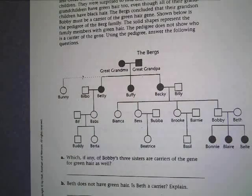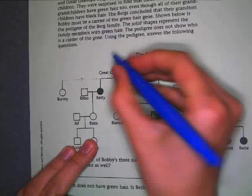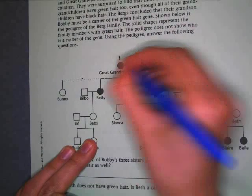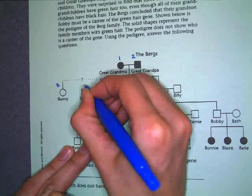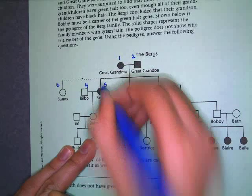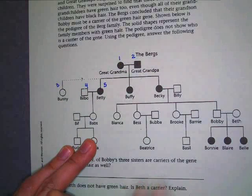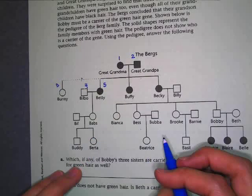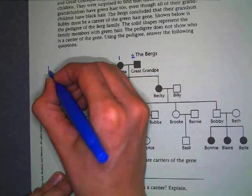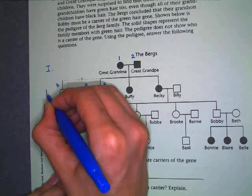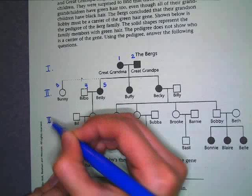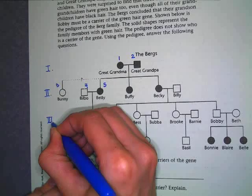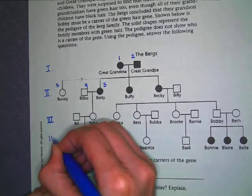The way you number them is you go from left to right. So this would be one, two, three, four, five, and so on and so forth. Another thing that's in most pedigrees — this is just an introductory sheet — is that they number each generation with Roman numerals. So this would be generation one, generation two, generation three, and generation four.